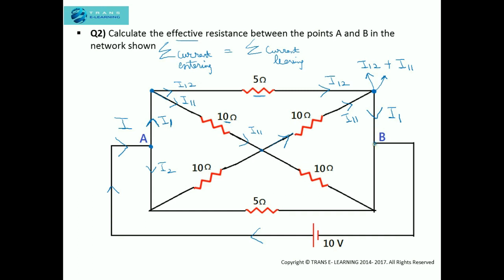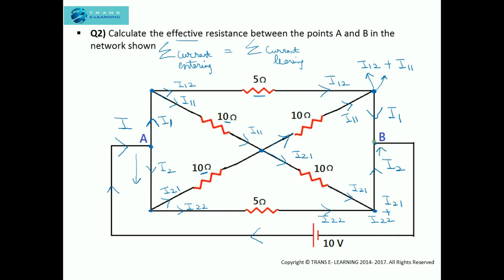Now what about the current I2? Here again the current I2 will get divided into I21 and I22. This I22 will flow through the 5 ohm resistor and reach this point, so at this point we have current I22. The current I21 will flow through the 10 ohm resistor, move through another 10 ohm resistor, and reach this point, so at this point we also have I21. Therefore I22 plus I21 equals I2. The current I2 enters the circuit and leaves through this area reaching point B, where we have both I1 and I2.